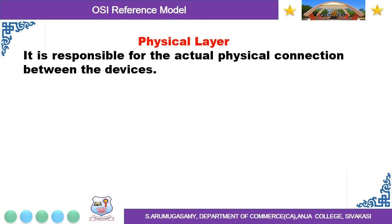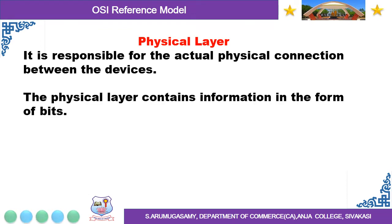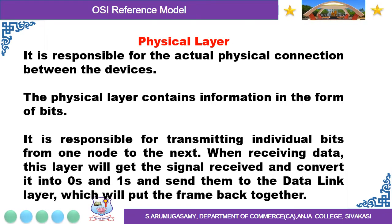Physical Layer: It is responsible for the actual physical connection between the devices. The physical layer contains information in the form of bits. It is responsible for transmitting individual bits from one node to the next. When receiving data, this layer will get the signal received and convert it into 0s and 1s and send them to the Data Link Layer, which will put the frame back together.